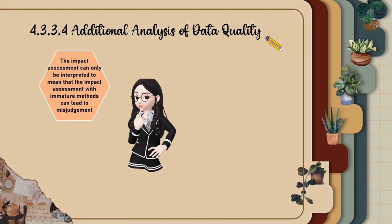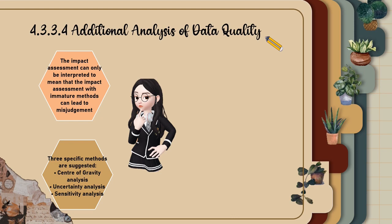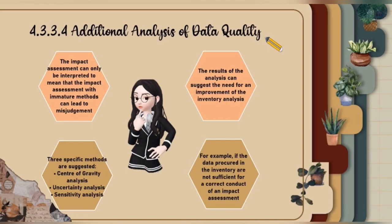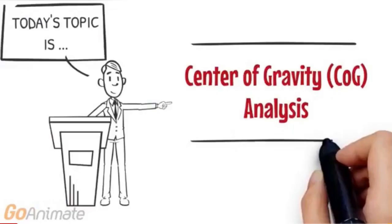Additional analysis of data quality. The impact assessment can only be interpreted carefully, as immature methods can lead to misjudgment. Three specific methods are suggested: center of gravity analysis, uncertainty analysis, and sensitivity analysis. The results of the analysis can suggest the need for improvement of the inventory analysis — for example, if the data procured in the inventory are not sufficient for a correct conduct of an impact assessment.